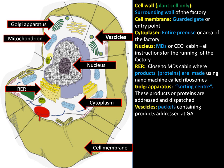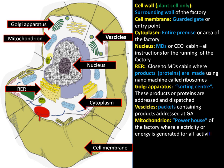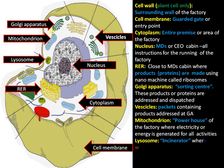Next comes the mitochondria, the organelle responsible for providing all energy required for carrying out activities inside the cell. It can be compared to an electricity generator or powerhouse of a factory, where electricity or energy required for all activities inside the factory is generated.